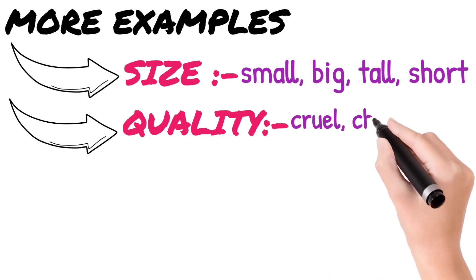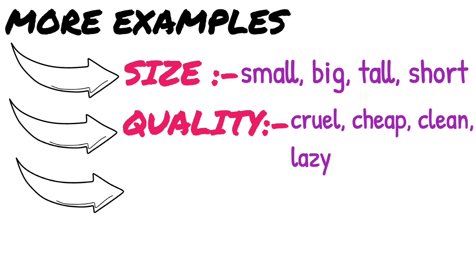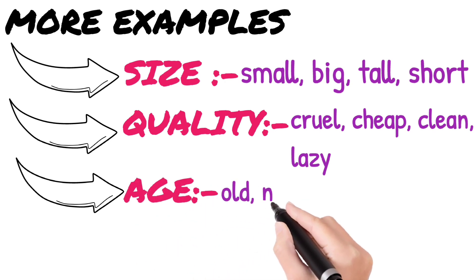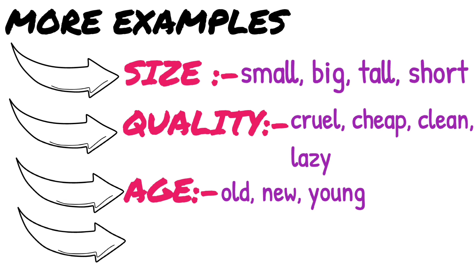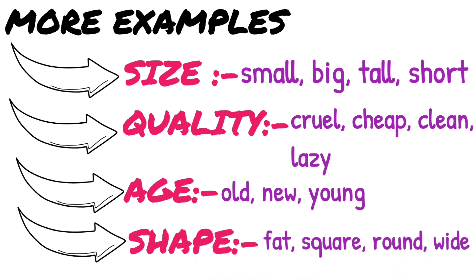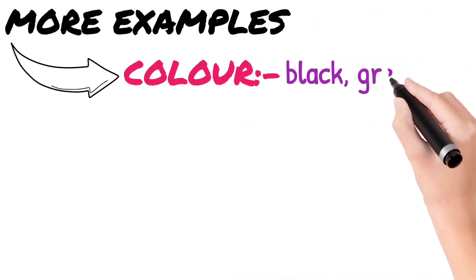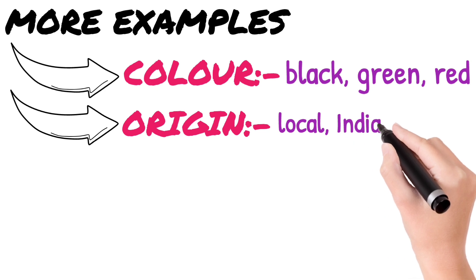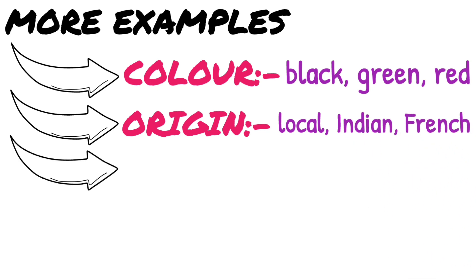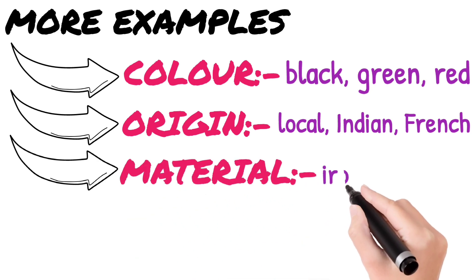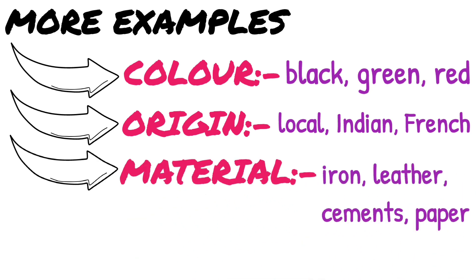Quality adjectives: cruel, cheap, clean, lazy. Age adjectives: old, new, young — all indicate age. Shape adjectives: fat, square, round, white — these indicate shape. Color adjectives: black, green, red, etc. Origin adjectives: local, Indian, French, Chinese, etc. Material adjectives: iron, leather, cement, paper — these words indicate the materials and are also known as adjectives. Note that all material adjectives are originally nouns but are used as adjectives.